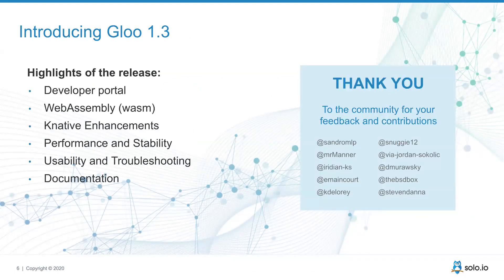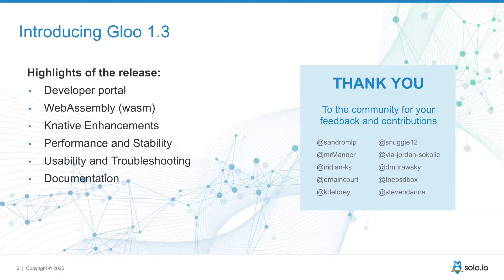So with the background out of the way, let's talk about Glue 1.3. It was released at the end of Q1 — April 1st or 2nd is when the initial version came out. We've shipped a couple of patch releases since then; I think we're on 1.3.6 for today's showcase. The highlights for 1.3, first and foremost, are the developer portal — I'll give a demo on that in the second half. But there were a number of other improvements to call out for this release.